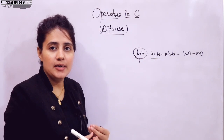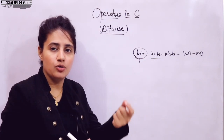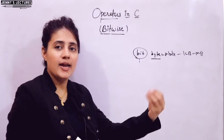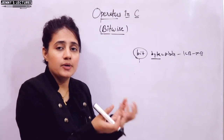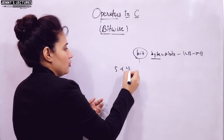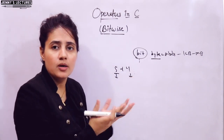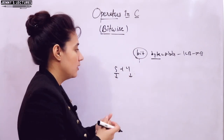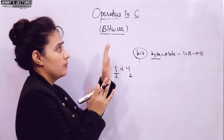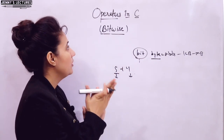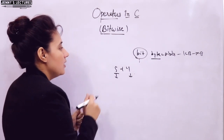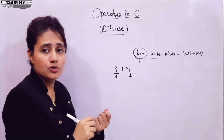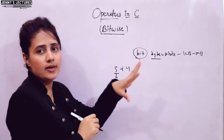We can manipulate data at bit level. In the ALU — the arithmetic logic unit — every mathematical and logical operation is executed at bit level, because in computer memory we cannot store values like 5 or 4 directly; they are stored in binary form as 0s and 1s, generally in 8 bits. In C programming we can also perform bitwise operations, but we can only apply these operators on integer and character values — not on float and double values.